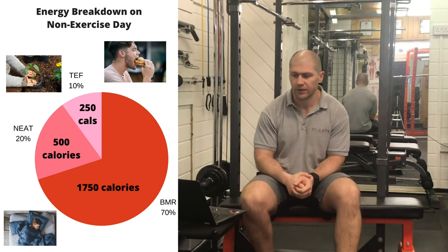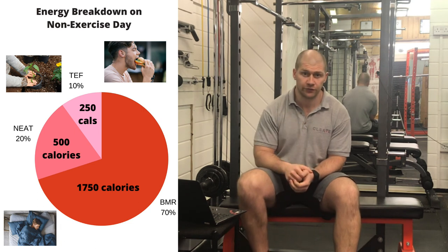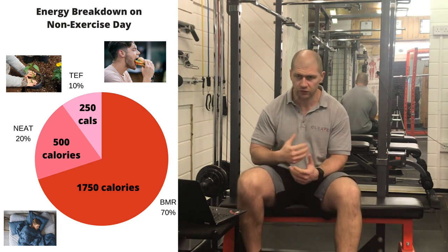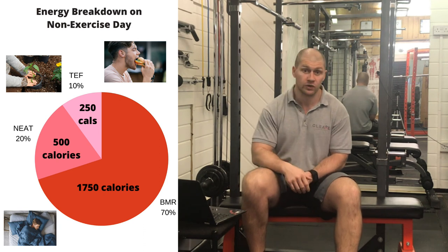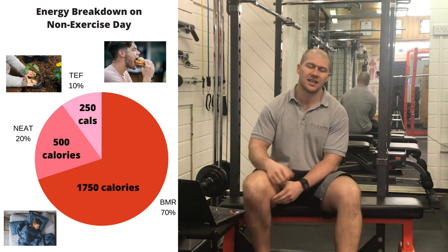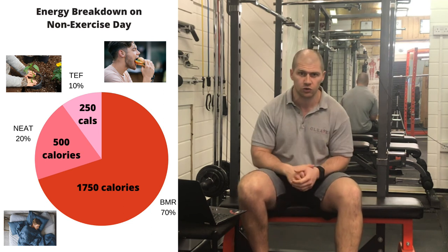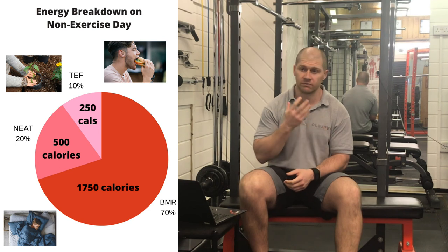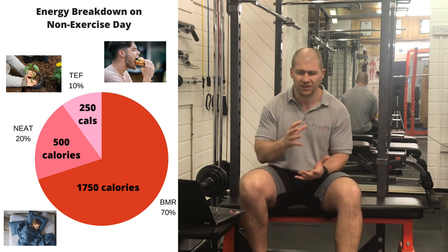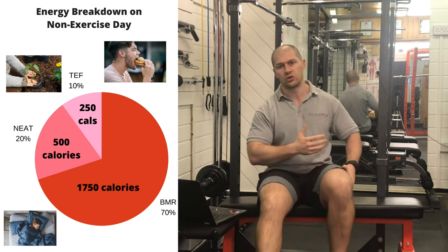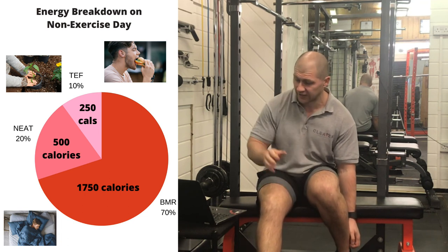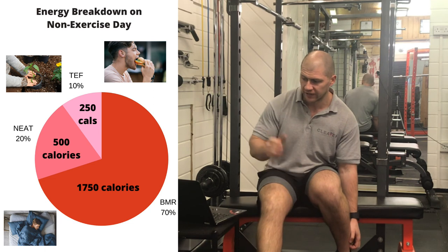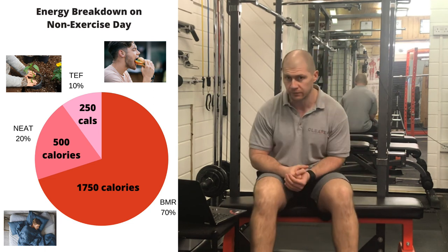That leaves 750 calories. Approximately 10% will come from the thermic effect of food — when I'm chewing, digesting my meals, absorbing nutrients, metabolising the food I eat — that will be about 250 calories. Which means my non-exercise activity thermogenesis, my NEAT — the energy my body uses to do things like hand gestures when talking, speaking volume, blinking, doing domestic chores, simply walking around the house — on a non-exercise day, that's basically where my calories go: 500 to NEAT, 250 to the thermic effect of food, and 1,750 to my basal metabolic rate.